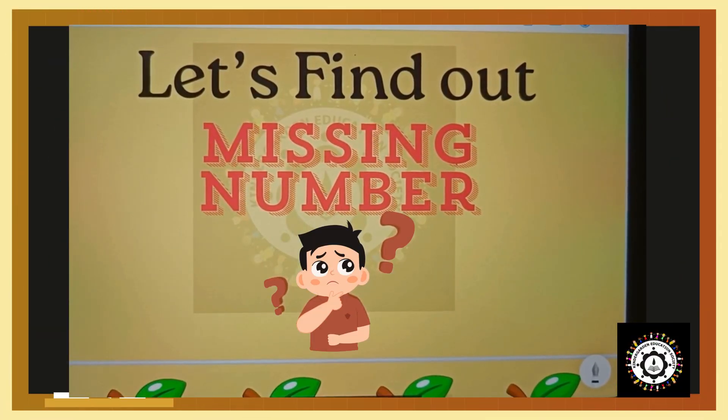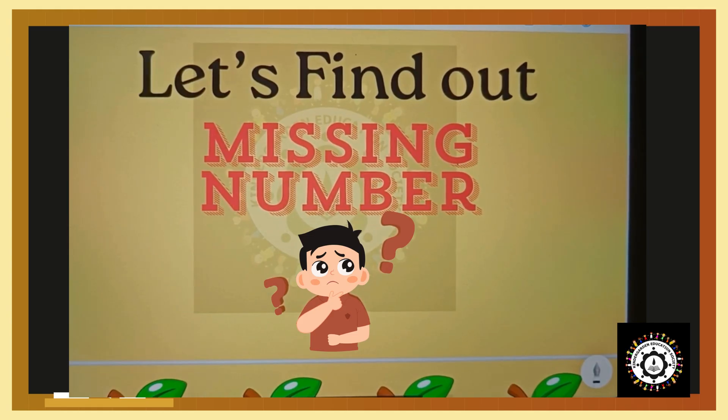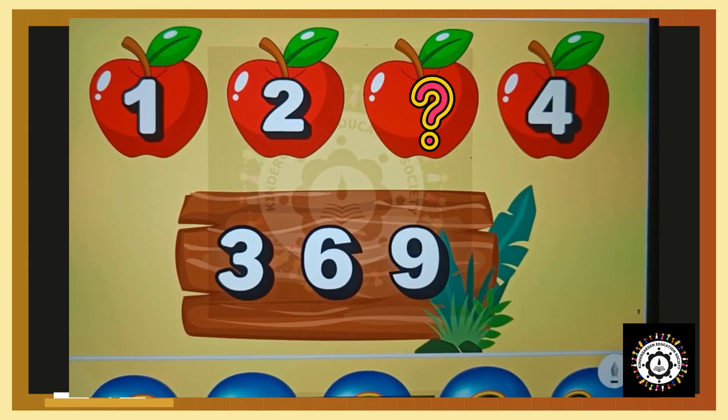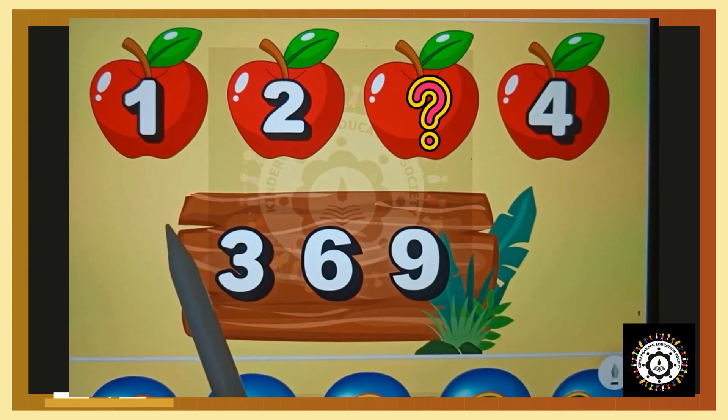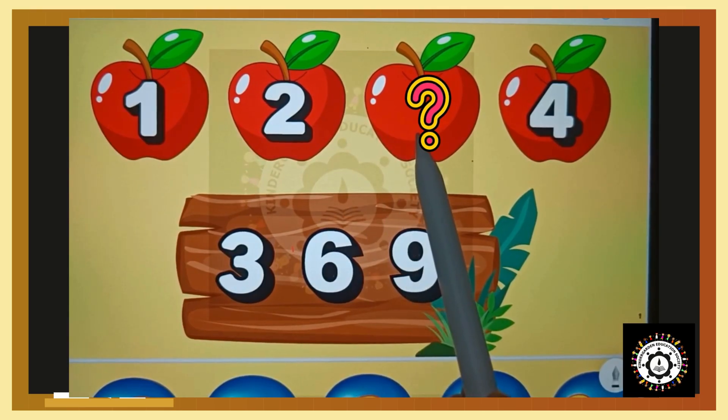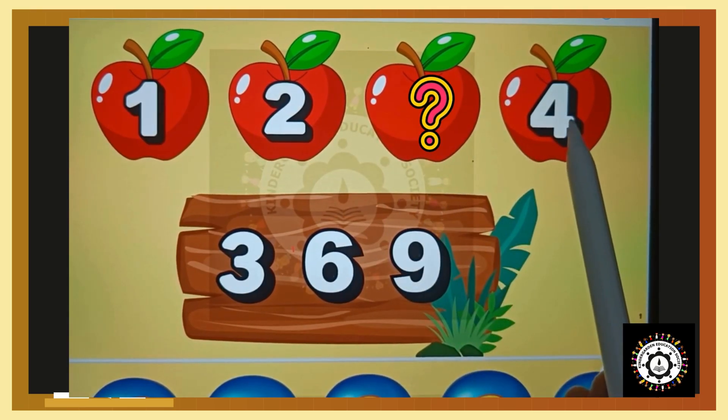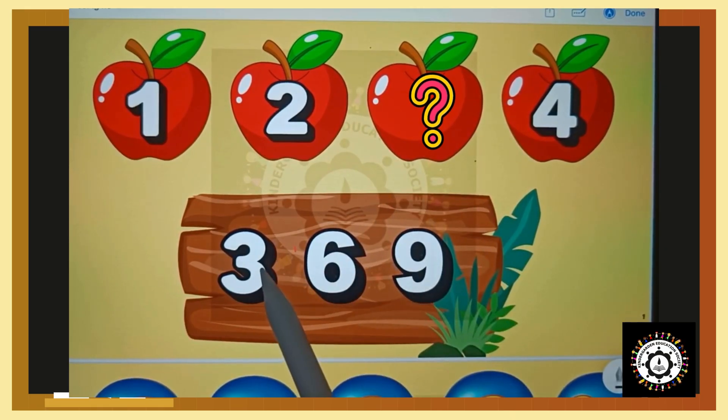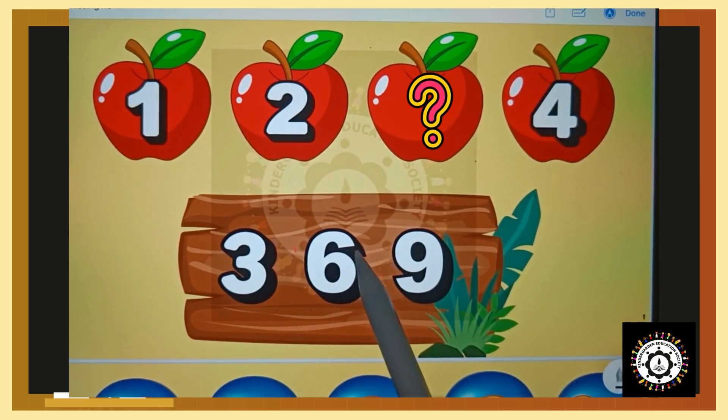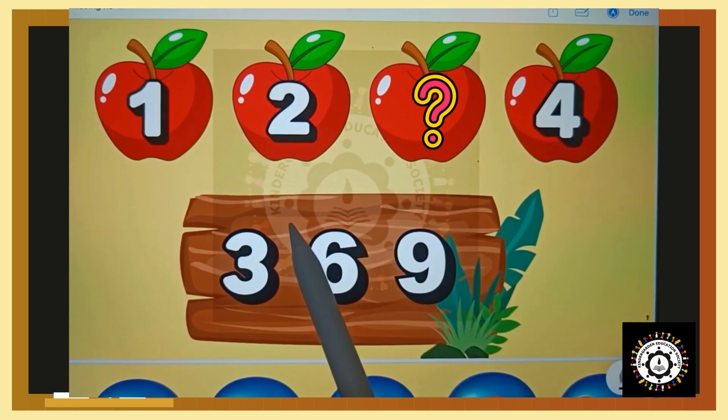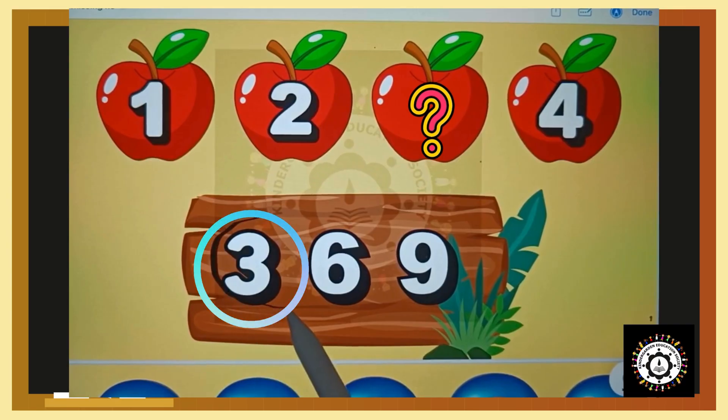Hello little friends, today we will play a number game. Let's find out the missing number. Here: one, two, missing number, four. Which is the missing number? Is it three, six, nine? What comes after two? Yes, it's three.